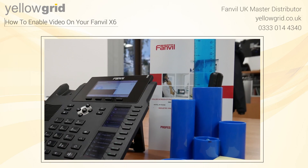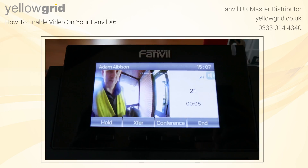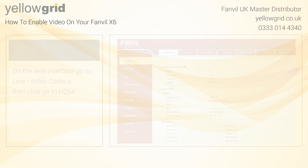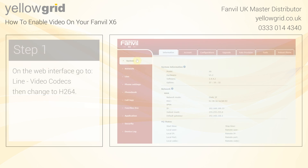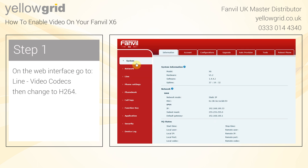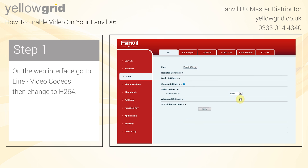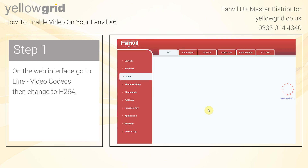This video will show you how to enable video on your Fanville X6 on the web interface. Go to Line, and under SIP go to Video Codecs and change to H.264. Once you have clicked Apply, check that the video on your X6 is enabled.